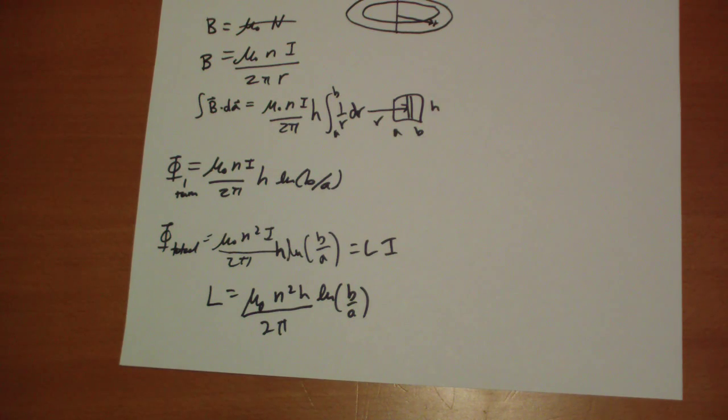The reason why this is, is that whenever you have a changing magnetic field, Lenz's law states that the current is going to try to form a magnetic field that opposes that change, tries to maintain the magnetic field the way it was.